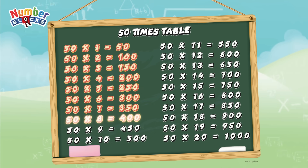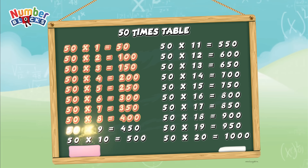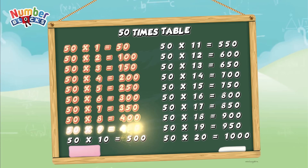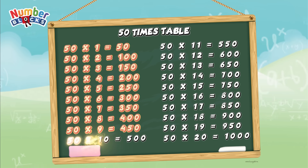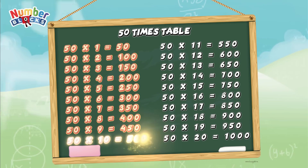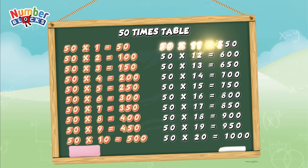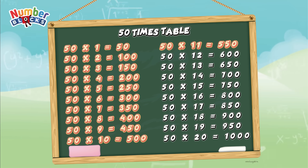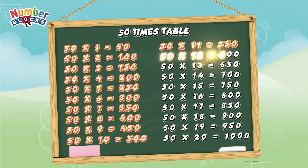50 multiplied by 8 is equals to 400. 50 multiplied by 9 is equals to 150. 50 multiplied by 10 is equals to 500. 50 multiplied by 11 is equals to 550.